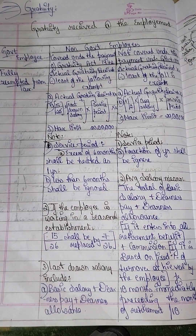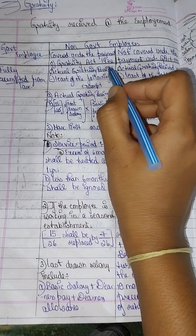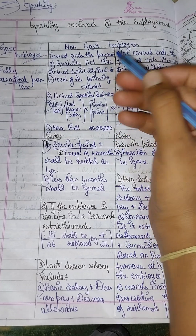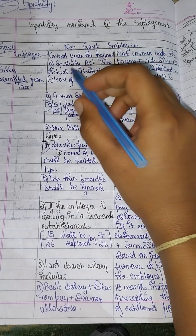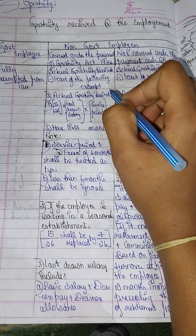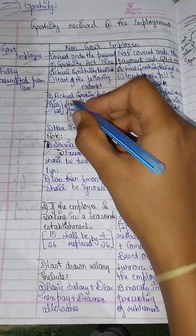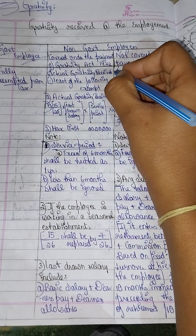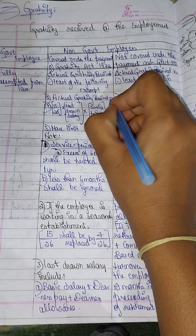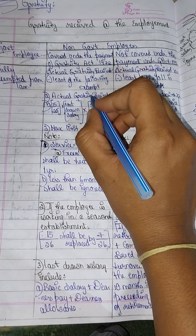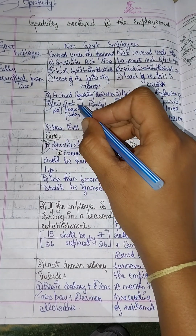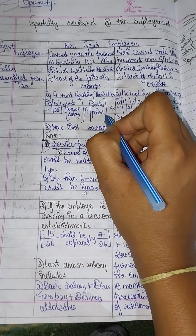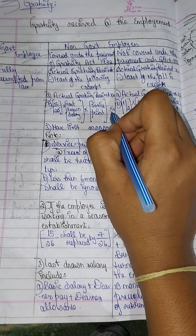Now we open the format and start with the marks. For employees covered under the Payment of Gratuity Act 1972, the least of the following is exempt: (A) Actual gratuity received — put that amount in the outer column. (B) 15/26 × last drawn salary × service period — the answer goes in the outer column.